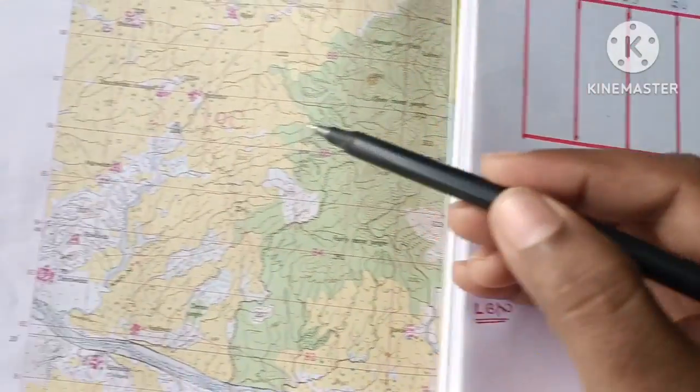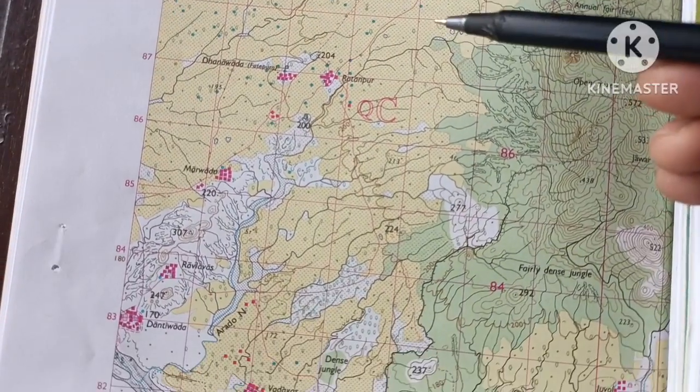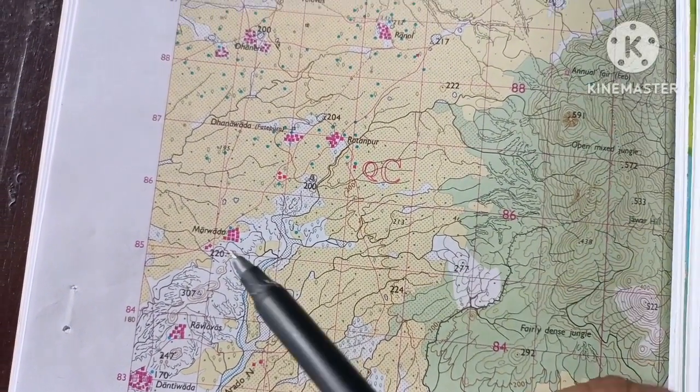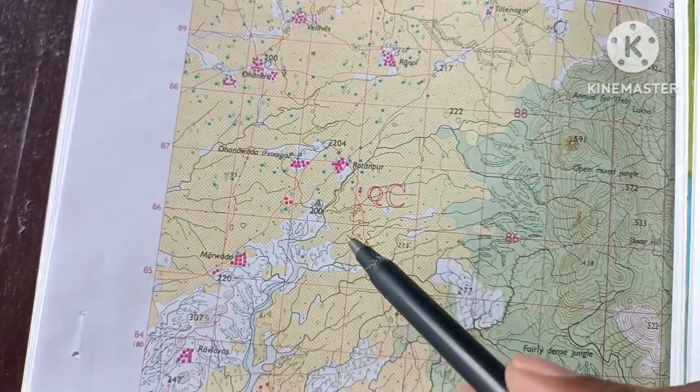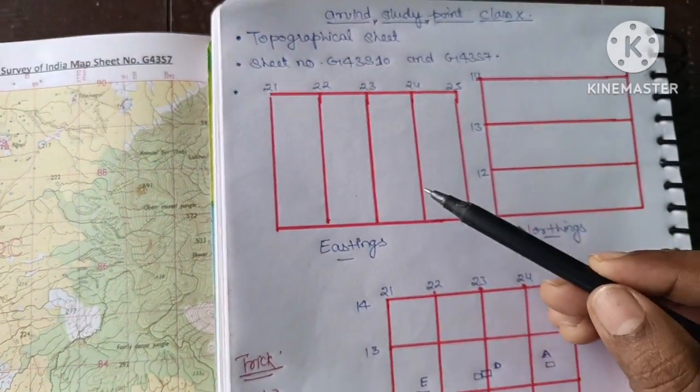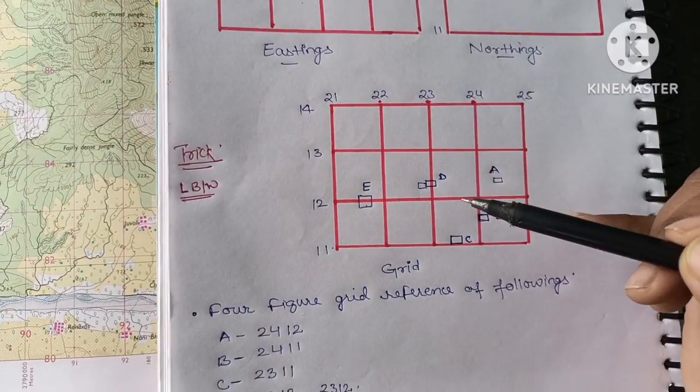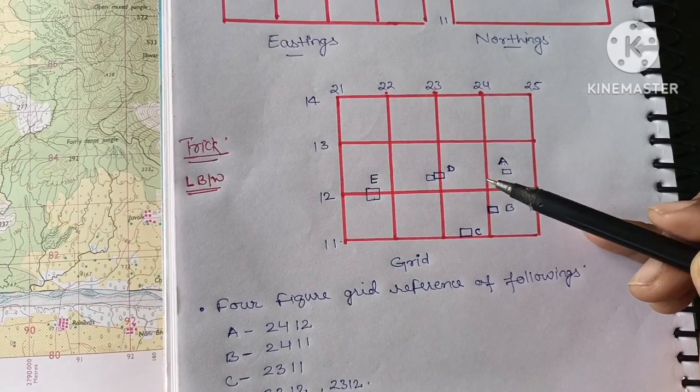In this we will cover four-figure grid reference. So for that purpose, these vertical lines are referred to as eastings and these horizontal lines are called northings. In map you can see these red lines, vertical lines, these red vertical lines are called eastings and these horizontal lines are called northings. When these easting and northing lines meet or converge, they form grid boxes.